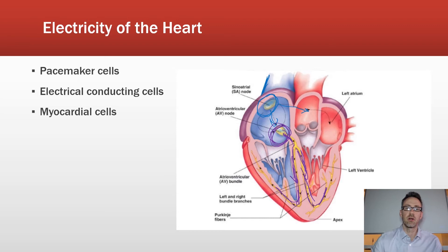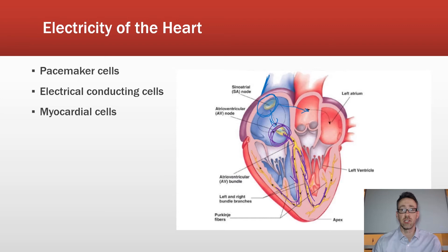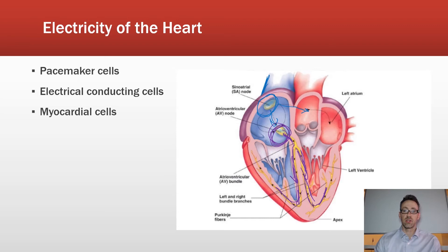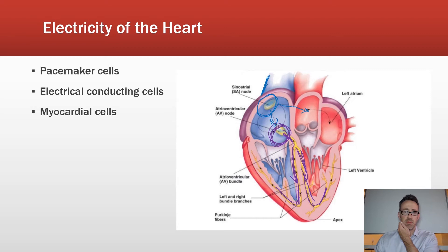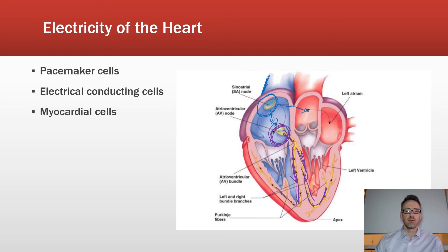The left and right bundle branches turn into Purkinje fibers, interwoven among all the cardiac myocytes in the ventricles. This entire pathway — SA node to atria to AV node to bundle of His to bundle branches to Purkinje fibers — is very fast, conducted via gap junctions, and produces what we see on an ECG.